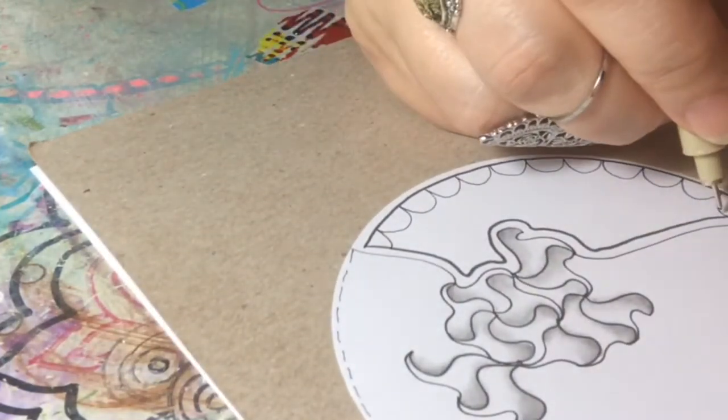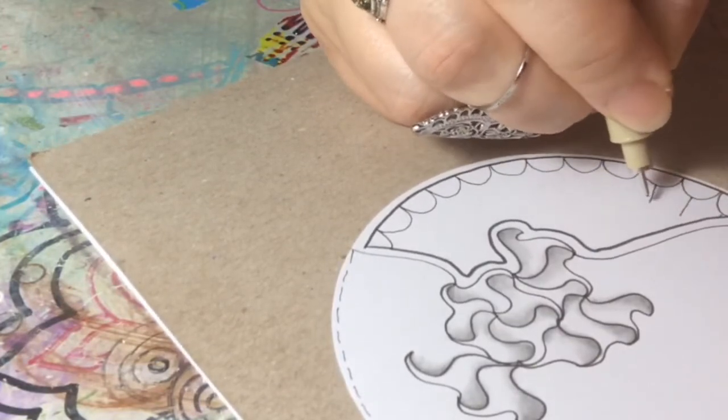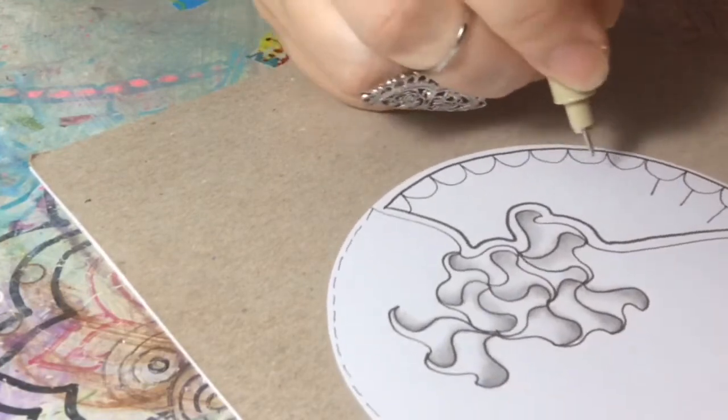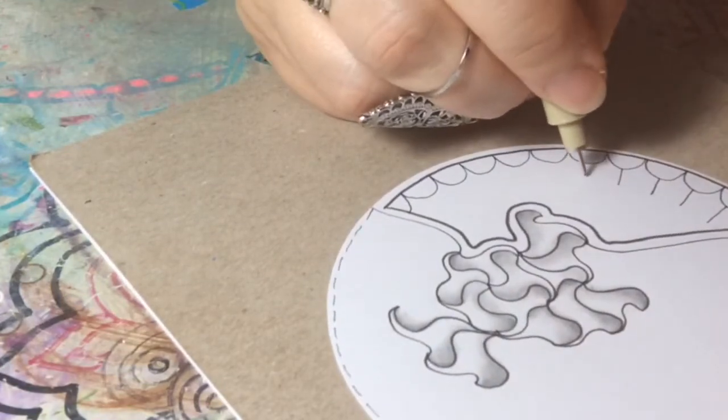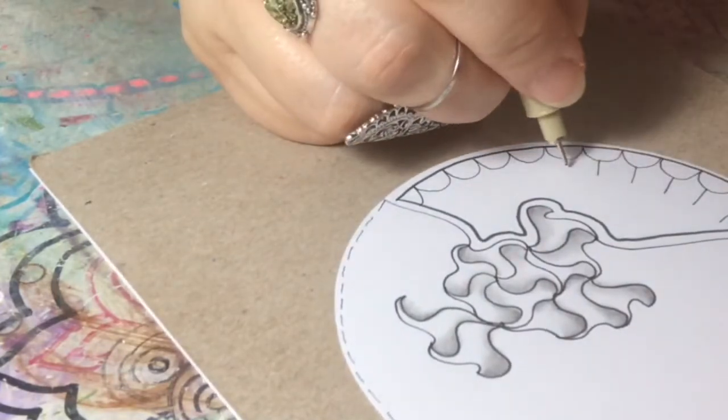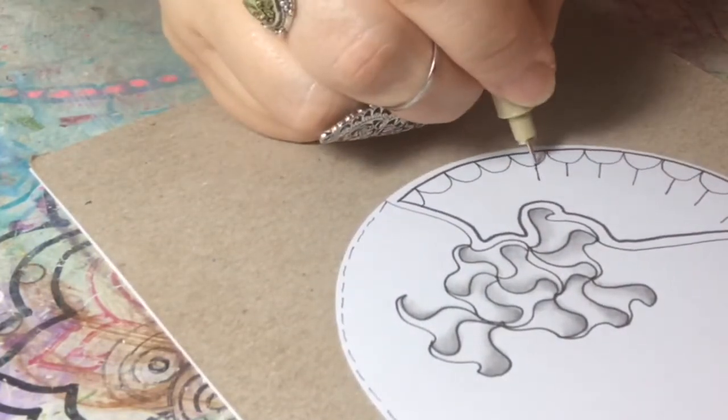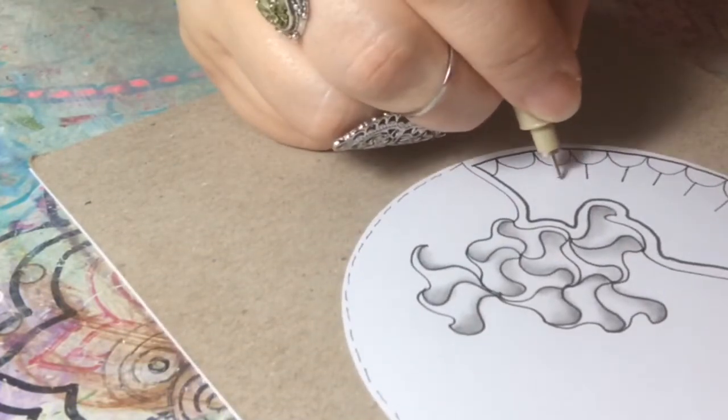Now you're gonna draw some lines right in the middle of that scallop like that, and you're gonna do that all the way across. I have to rotate because I'm on a circle here.